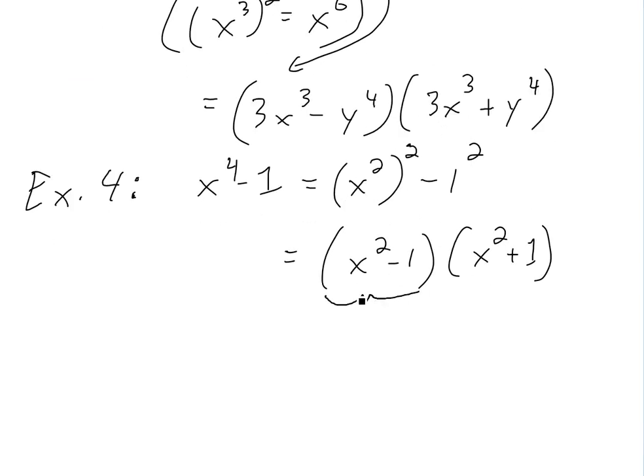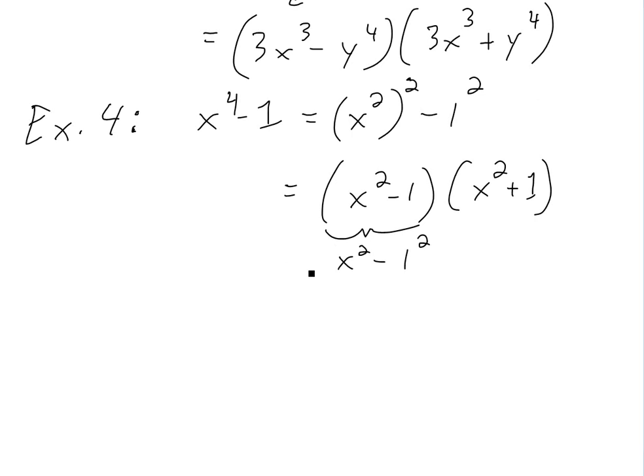This one is written as x squared minus 1 squared, so you could write that one as a difference of squares. If we simplify it further, we plug this into the formula as well. We get x minus 1, x plus 1, and then times it by the last one, x squared plus 1. And there you go, there's the factoring for this function right here.